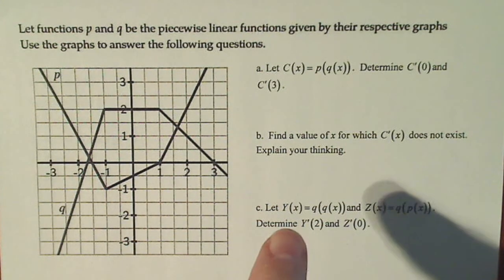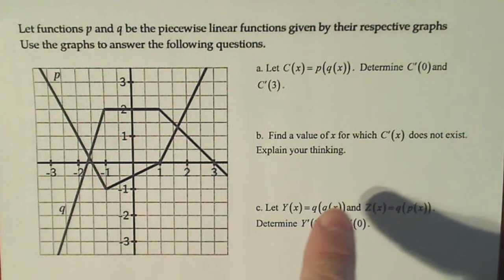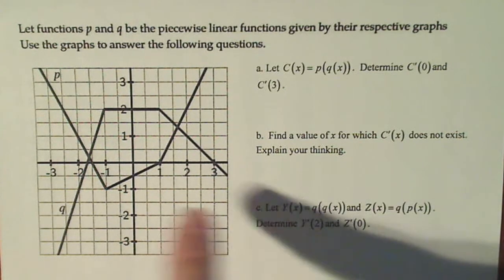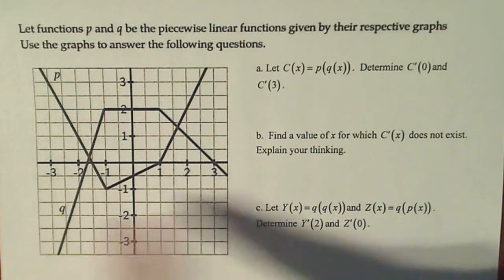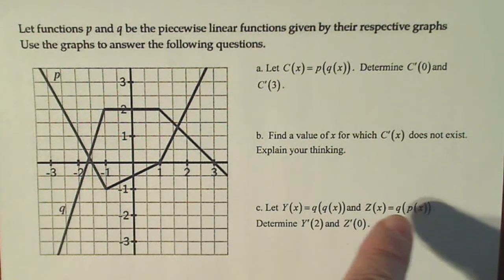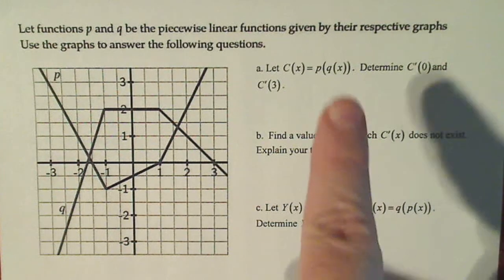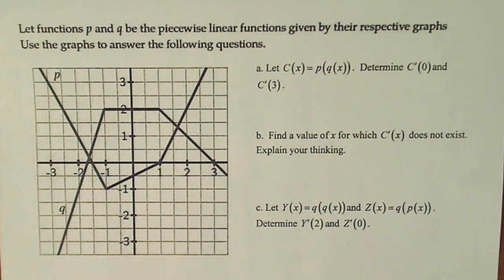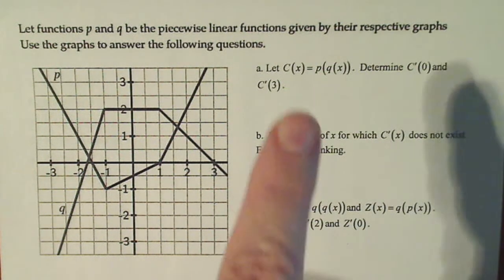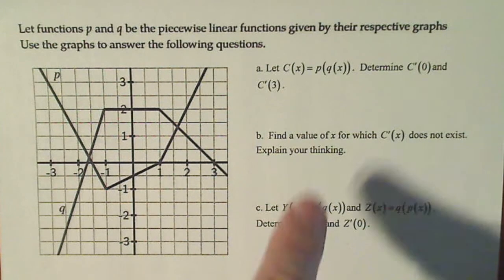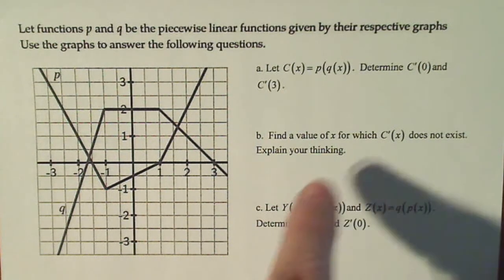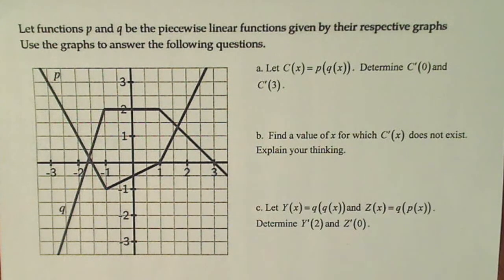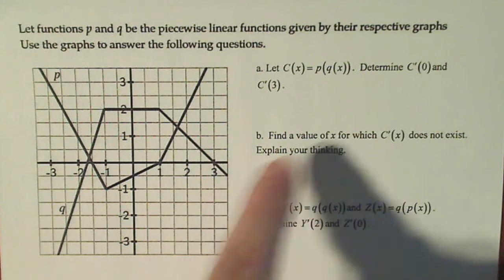Then let y equal this composition — so it's q composed with itself — and z equals q composed with p, which is the reverse of this. Then we're going to find the derivatives. So if we can do part a, we probably can do part c pretty well. Part b is interesting. So let's just try this problem out.